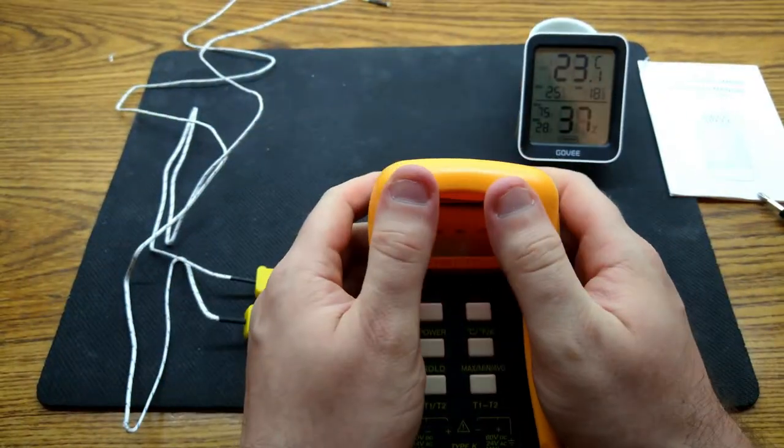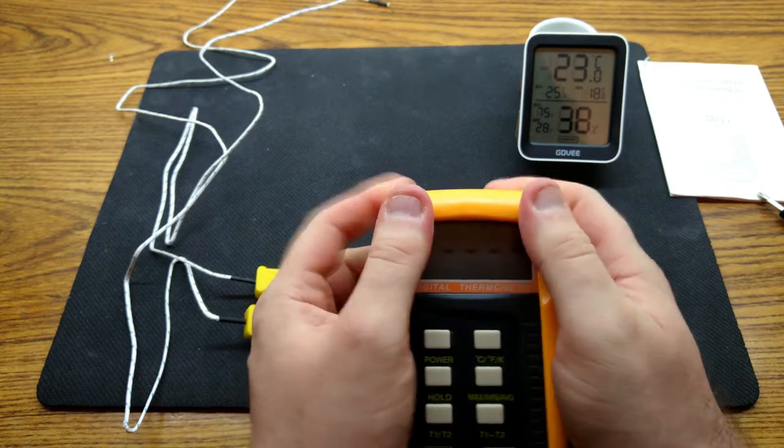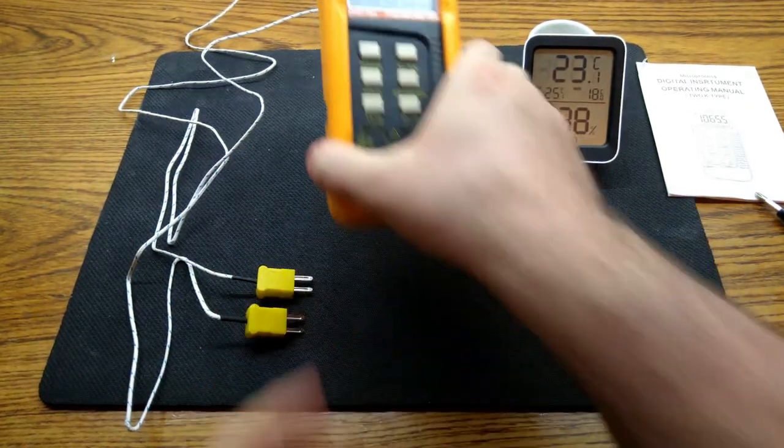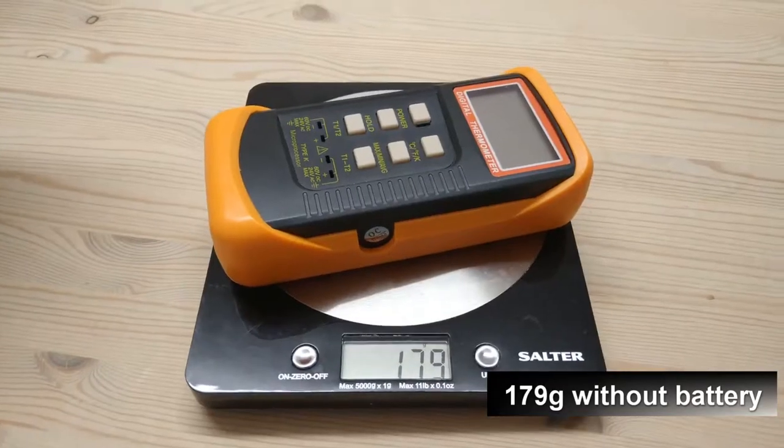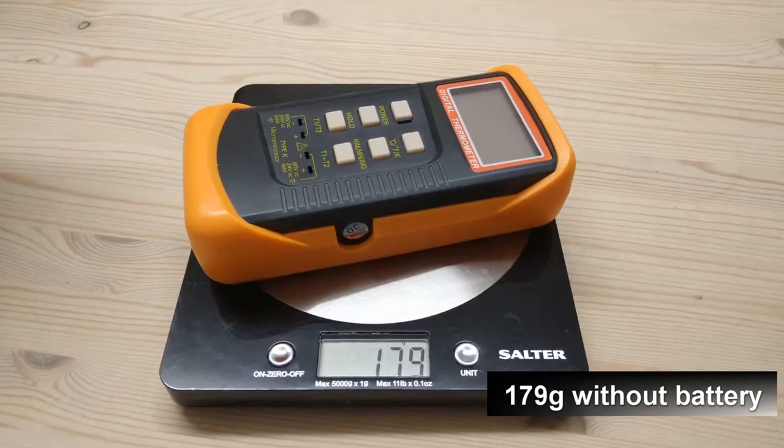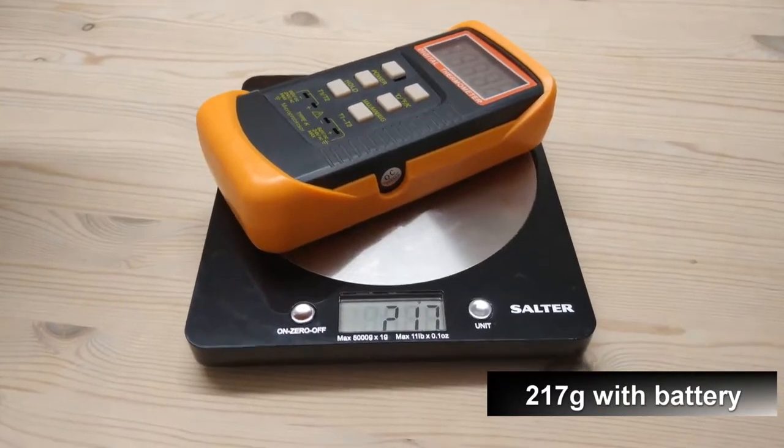In terms of weight, it feels very light, a bit too light compared to other thermocouple readers in my opinion. Without the battery it weighs just 179 grams, and with the battery included it weighs approximately 217 grams.